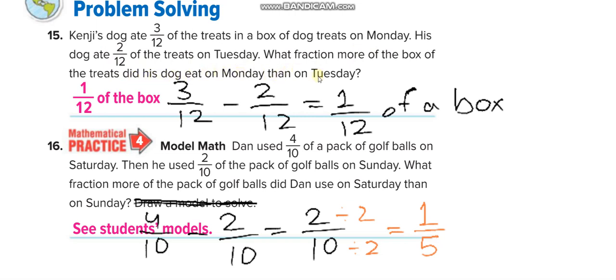So what fraction more of the box did his dog eat on Monday than Tuesday? So you minus the amount of Tuesday from Monday. So 3 over 12 minus 2 over 12 equals 1 over 12.